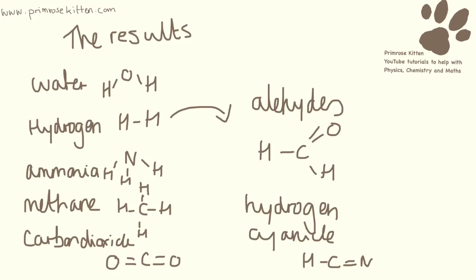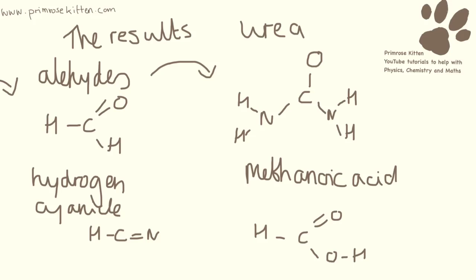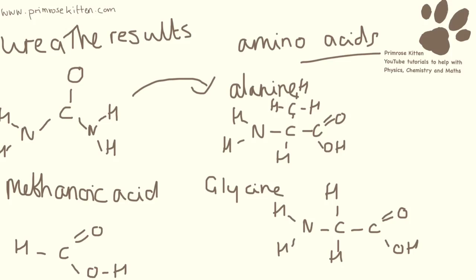What they started with was water, hydrogen, ammonia, methane, and carbon dioxide. All of these things were mixed together, and after a while they turned into aldehydes and hydrogen cyanide. Further modifications turned the aldehydes and the hydrogen cyanide into urea and methanic acid. These can further be turned into amino acids — and they produced lots and lots of different amino acids. These are just two of them, and loads of different amino acids were produced in this experiment.